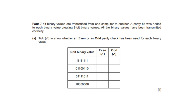Four 7-bit binary values are transmitted from one computer to another. A parity bit was added to each, creating 8-bit binary values. All values were transmitted correctly. Tick whether even or odd parity was used for each. Count the number of ones: if even, even parity is used; if odd, odd parity is used. The first has 8 ones — even. The next has 2 and 4 ones — even. The next has 6 ones — even. And the last has 1 one — odd.